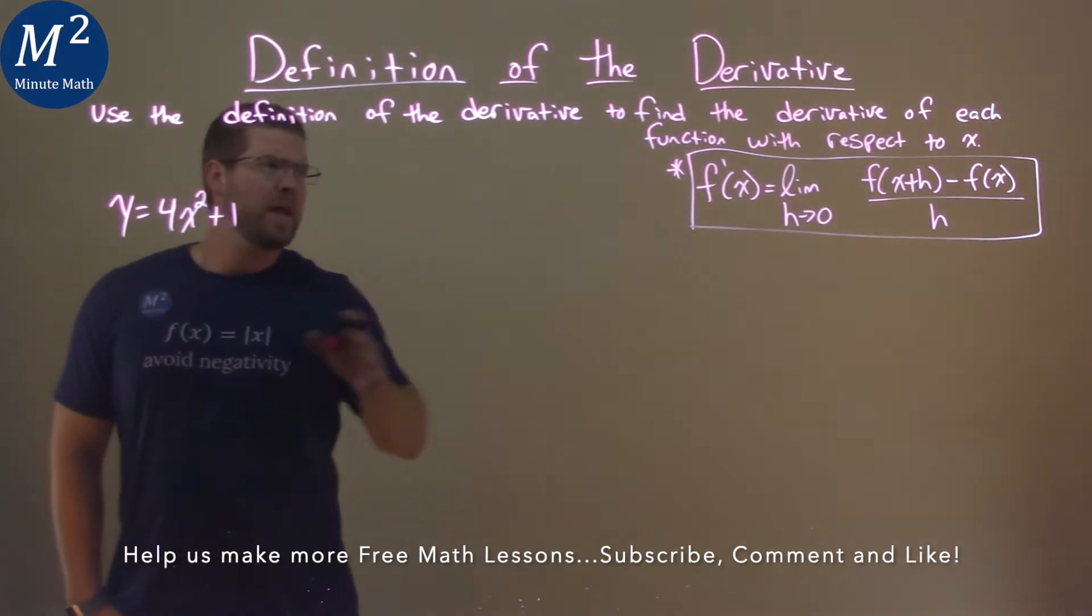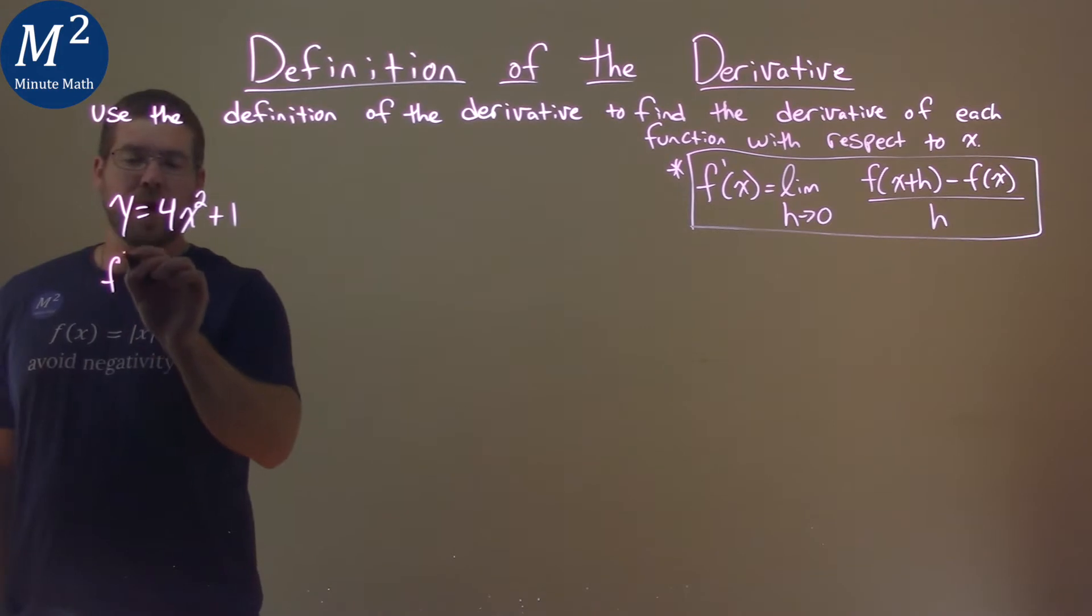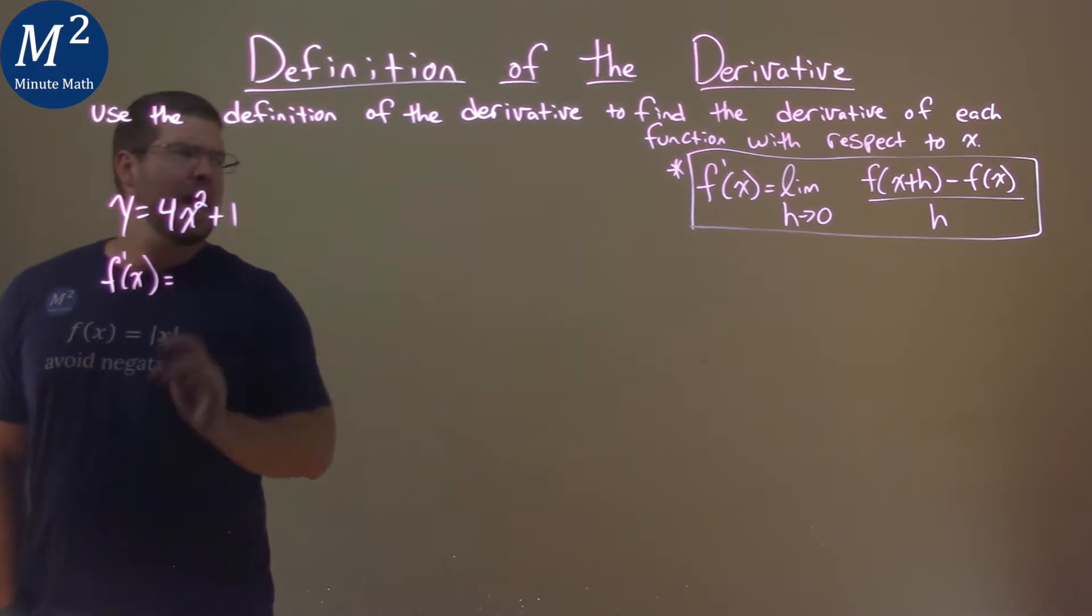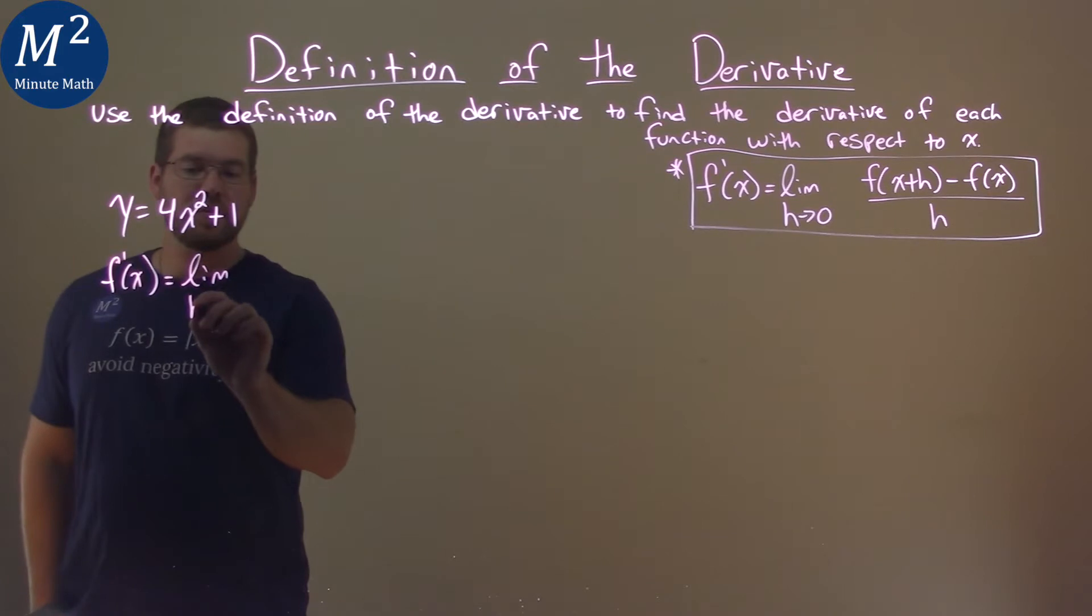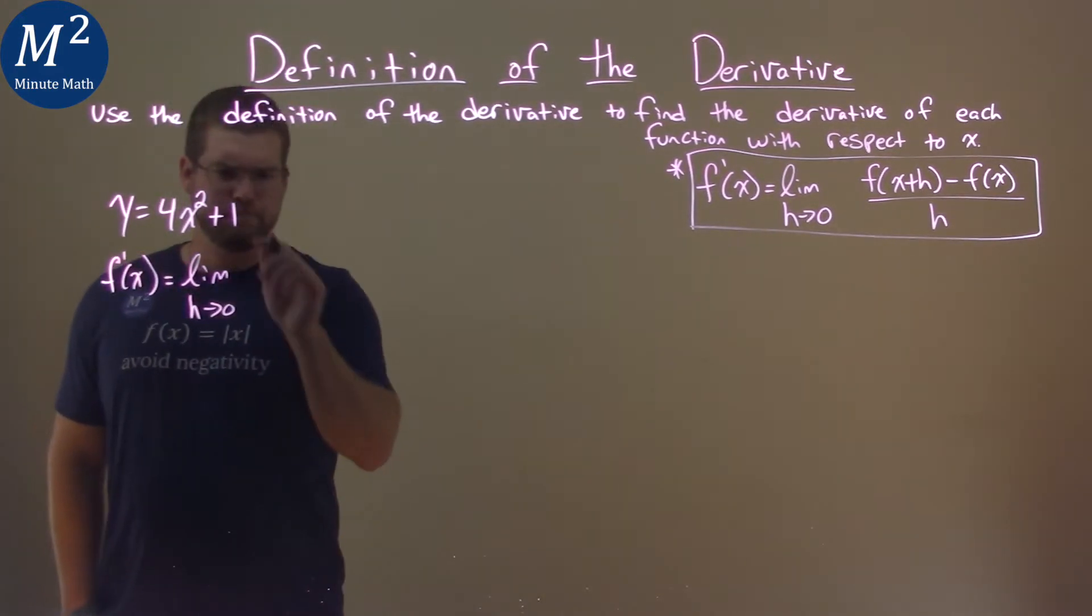So our function here, we're using our definition right there. We're going to find f prime of x, or y prime, and that's equal to the limit as h approaches zero of our function right here, our function 4x squared plus 1.